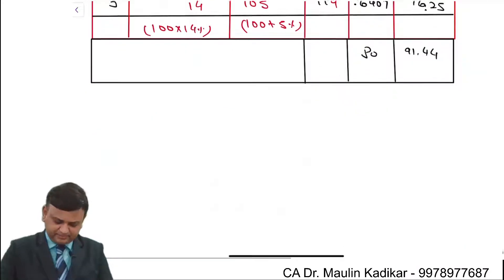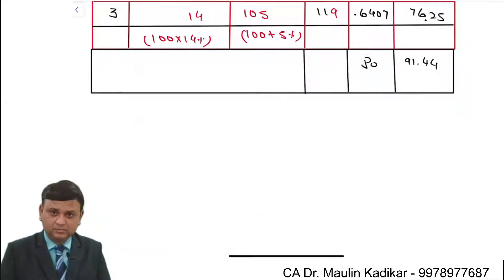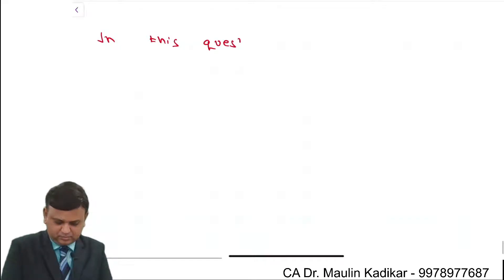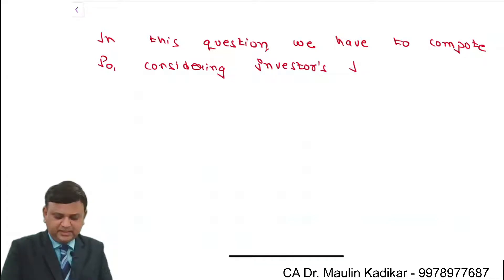I am dictating a small note for your understanding. In this question, we have to compute P0. So, considering discounting rate 16 percentage, good stop.